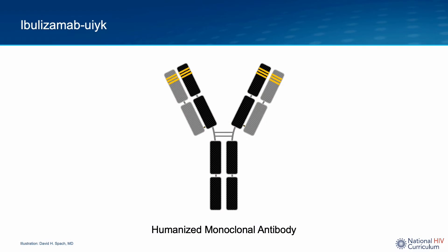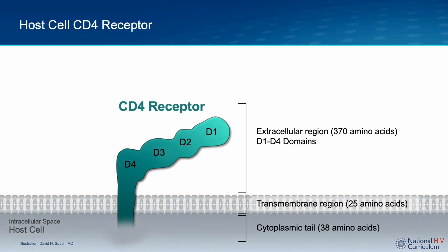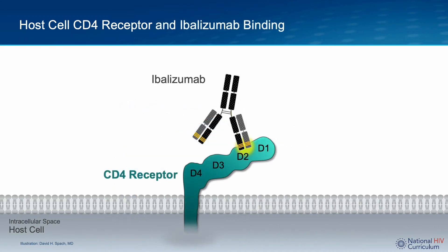Ibalizumab is a humanized IgG4 monoclonal antibody. These types of antibodies are genetically engineered from a single clone of cells and designed to target a specific antigen. Ibalizumab is designed to target a specific region of the CD4 T cell receptor. The CD4 receptor has various regions or domains, and ibalizumab binds to domain 2, or D2. It is important to note that domain 1, or D1, is the site where GP120 binds, so ibalizumab does not bind at the same site as GP120. Additionally, D2 — the ibalizumab binding site — is different from the site where MHC molecules bind and trigger a CD4 T cell immune response to a pathogen.